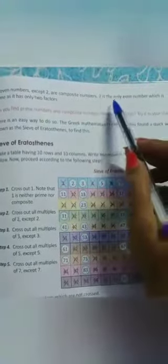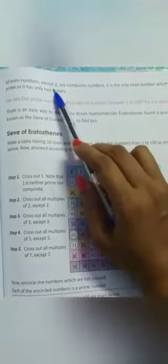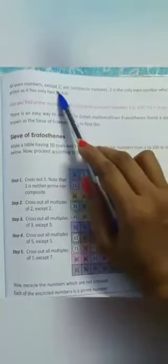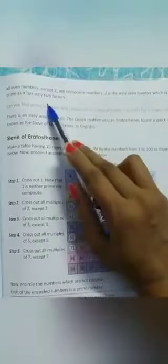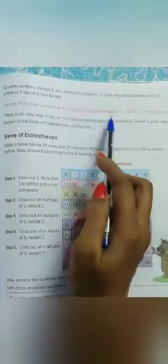Then come to next page. Now, all even numbers except two are composite numbers. Means jitne bhi even numbers hote hain, like multiples hote hain two ke, woh sare composite numbers, except two. Two is the only even number which is prime as it has only two factors. Which means two is the only even number hai jo ki prime hain, because it has only two factors.